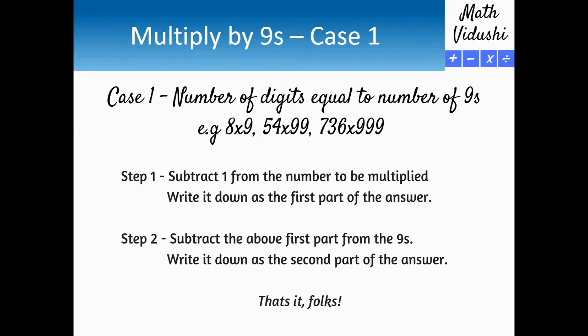The way we proceed is we subtract 1 from the number that is to be multiplied and write it down as the first part of the answer. We subtract from the 9's the above first part and we write it down as the second part of the answer.